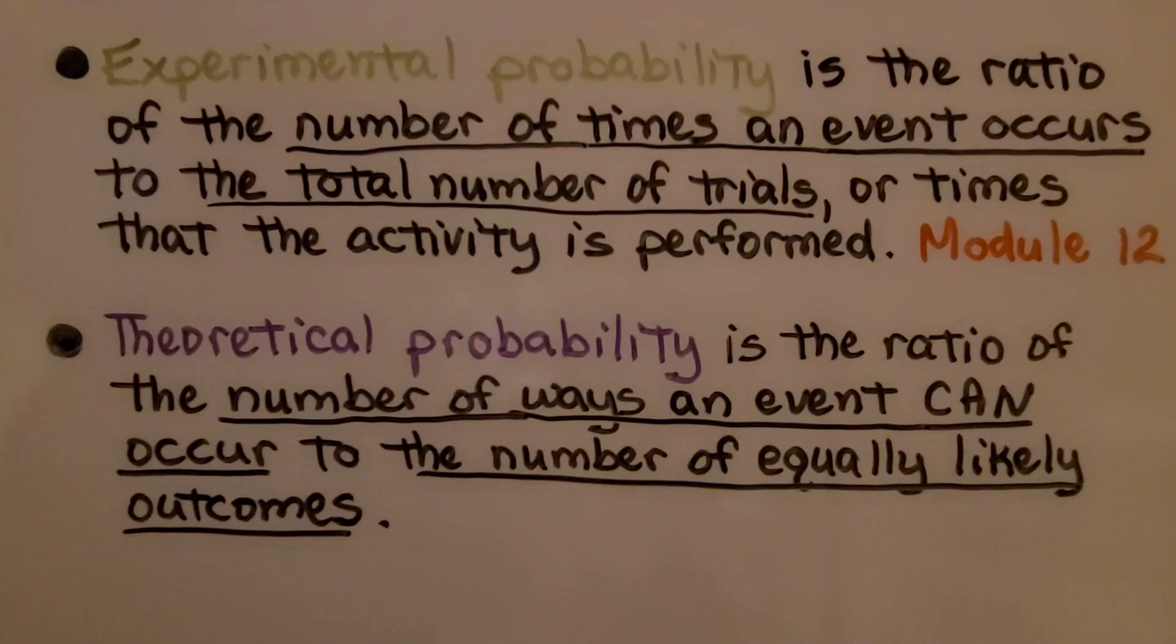Theoretical probability is the ratio of the number of ways an event can occur to the number of equally likely outcomes.